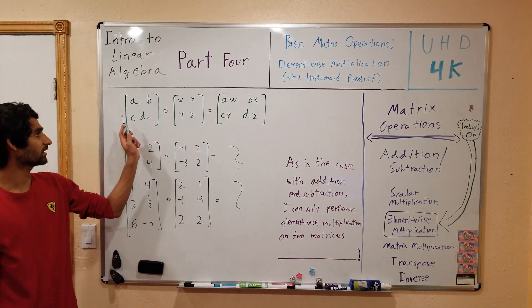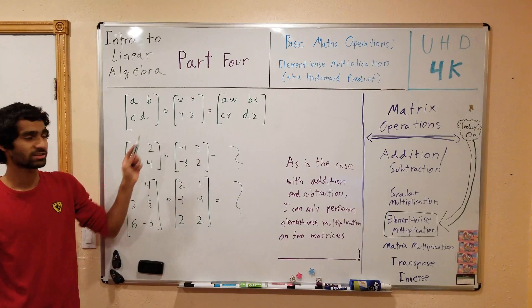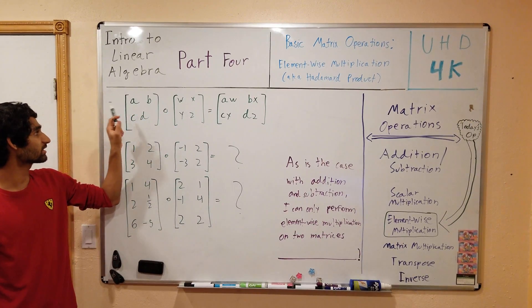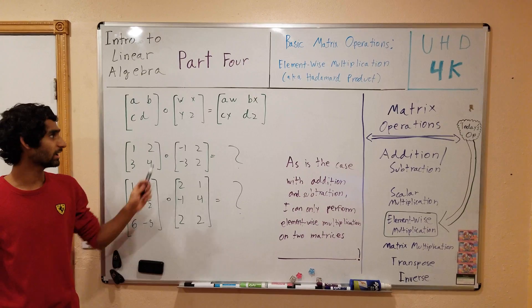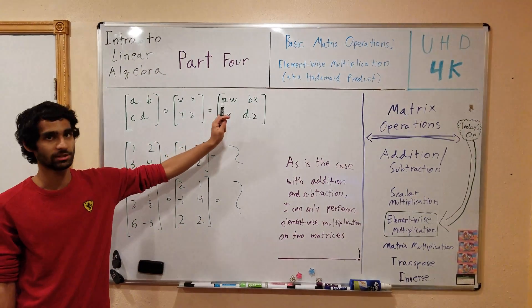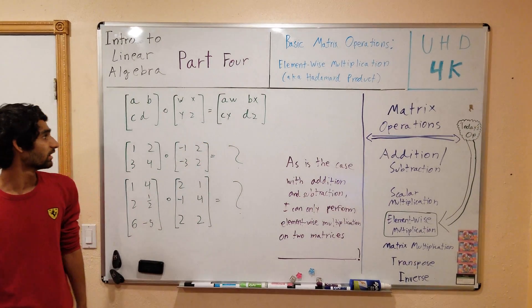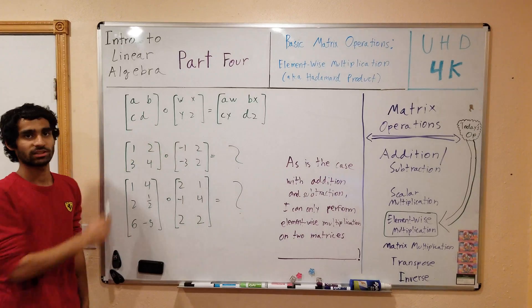In order to take the Hadamard product of two matrices, all we have to do is multiply the corresponding elements together. So if we have the matrix A, B, C, D multiplied by W, X, Y, Z, the Hadamard product is simply A times W, B times X, C times Y, D times Z. We denote the Hadamard product with an open circle.